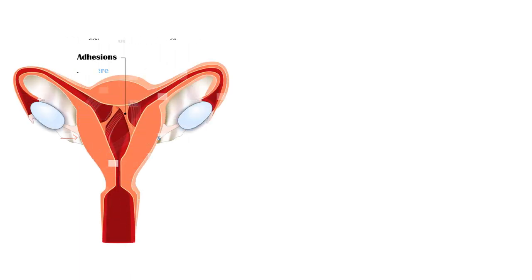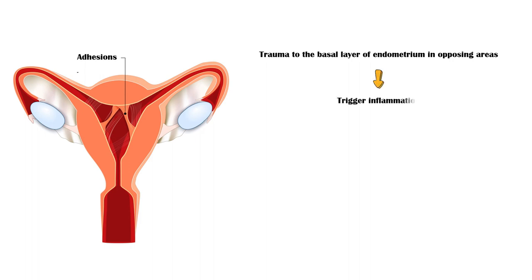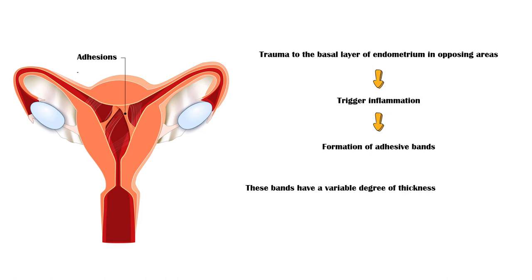Trauma to the basal layer of endometrium in opposing areas within the uterine cavity triggers inflammation, which leads to the formation of adhesive bands from one side of the cavity to the other. As you can see in this picture, the thickness of these bands is highly variable, and they may be spotty in location or confluent. They are also non-vascular.